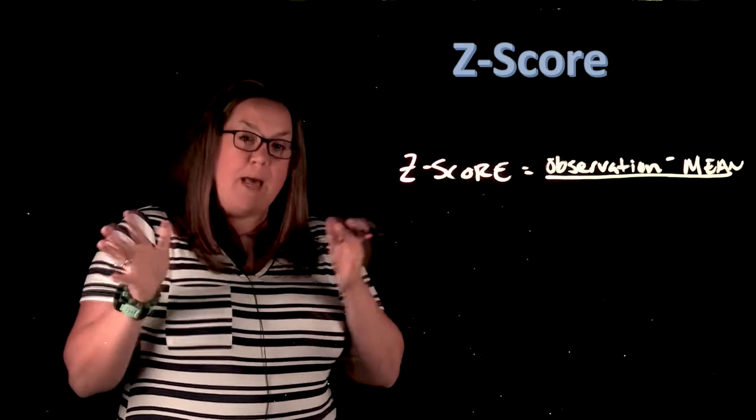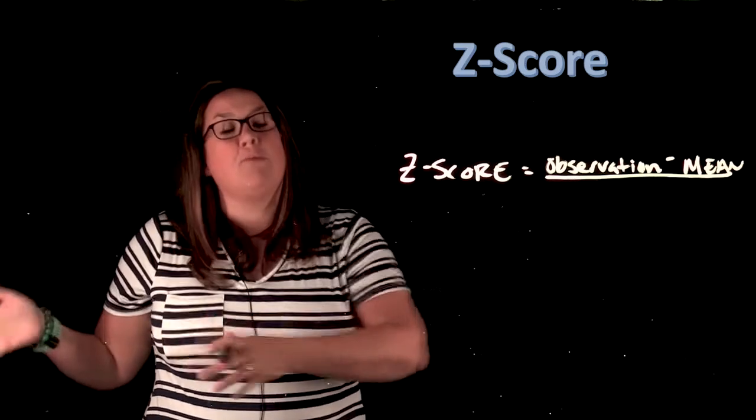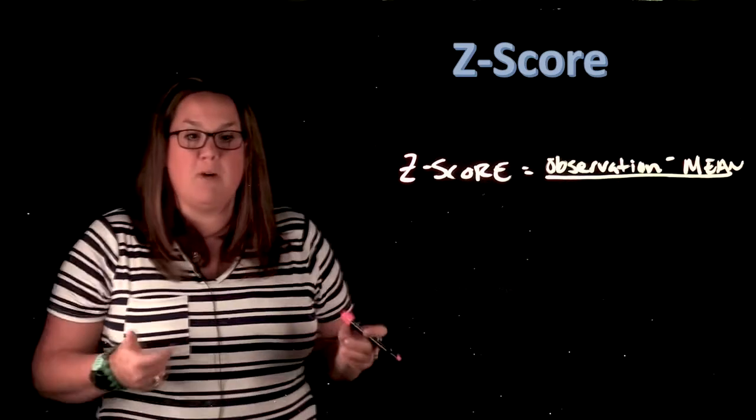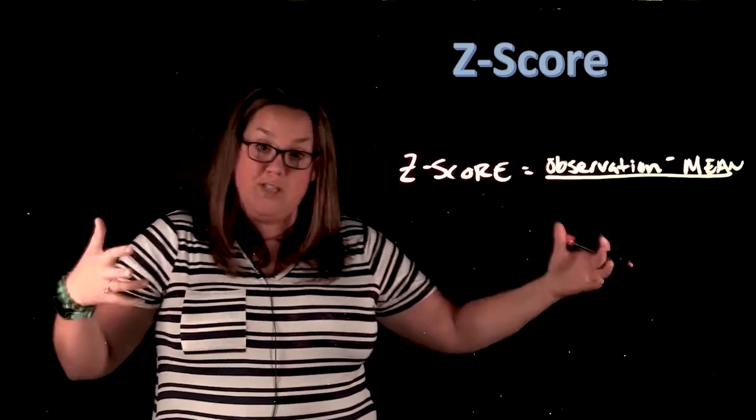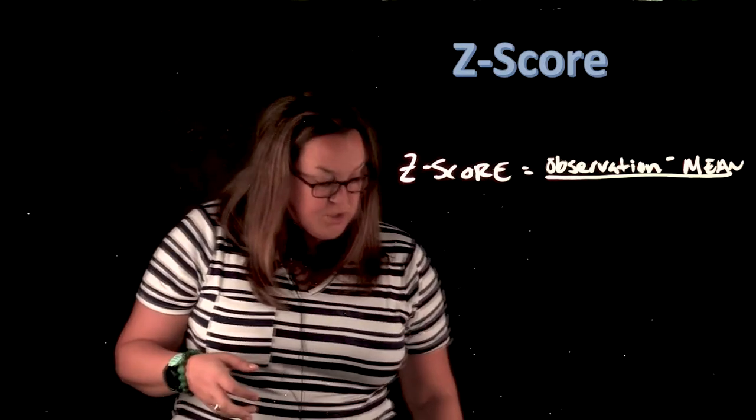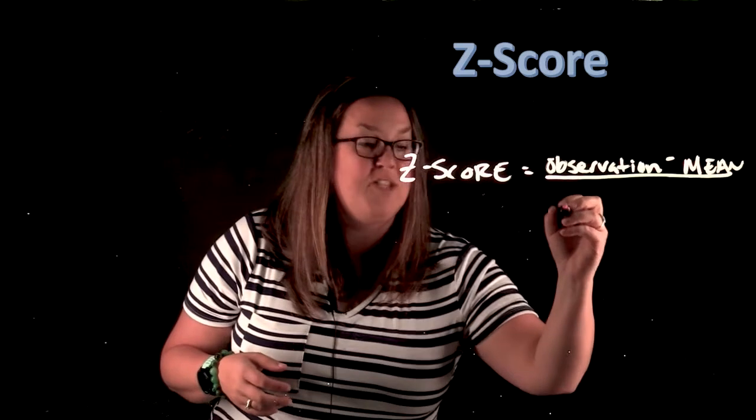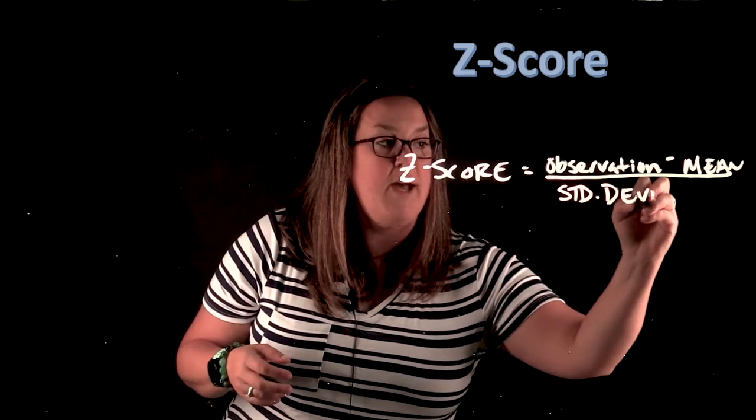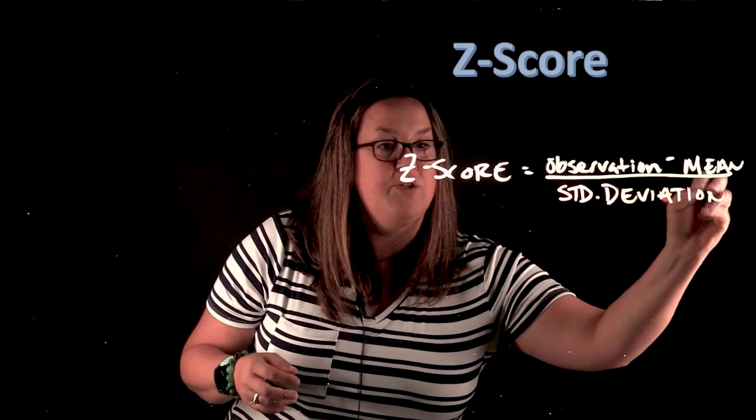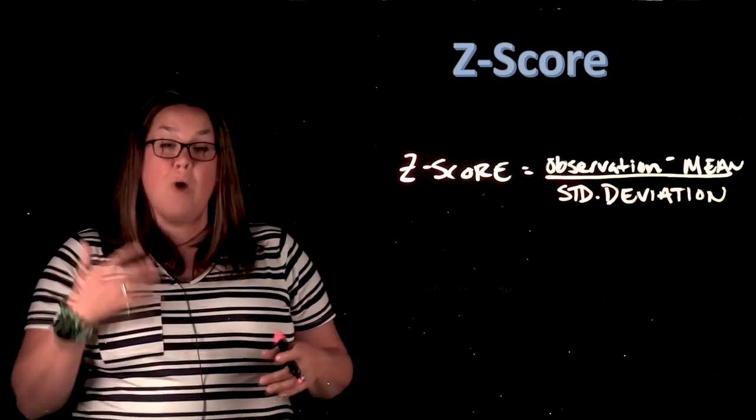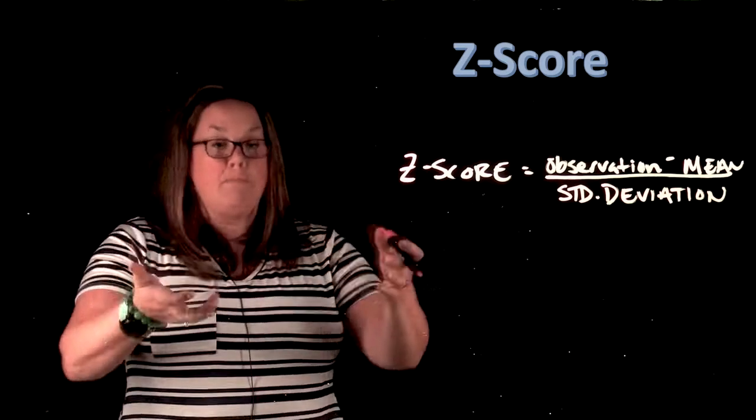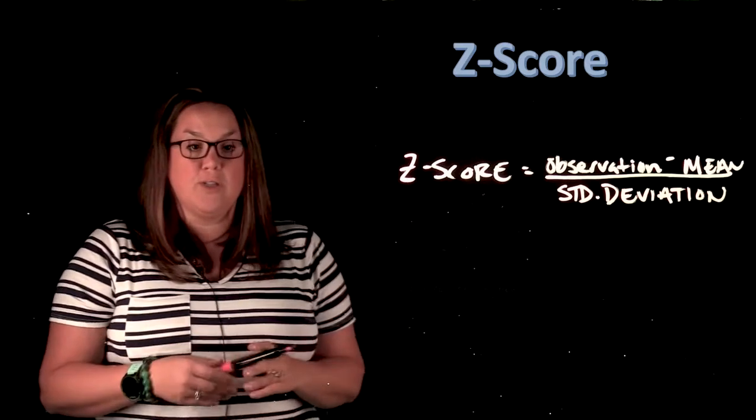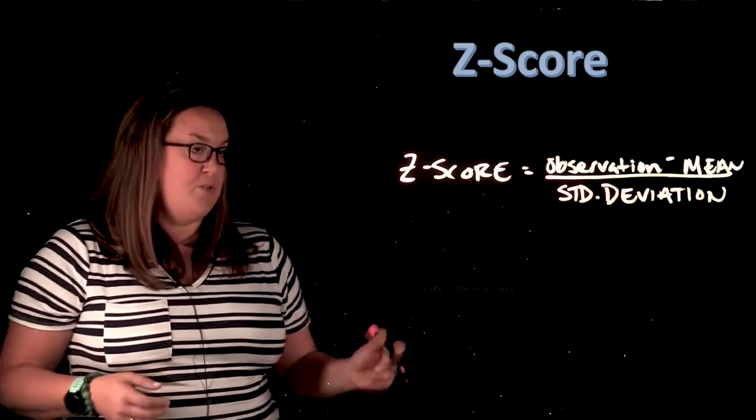So if you have a negative z-score, it's going to be below the mean. If you have a positive z-score, it's above the mean, and it's going to measure the distance from the mean. But it's going to do it in the number of standard deviations. And to do that, we need to divide by standard deviation. And that tells you how far it is from the mean based on how many standard deviations away it is.